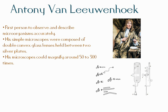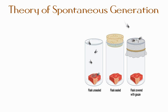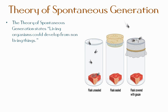From the earliest times, people had believed in spontaneous generation. Even the great Aristotle thought some of the simpler invertebrates could arise by spontaneous generation. The theory of spontaneous generation states that living organisms could develop from non-living things.